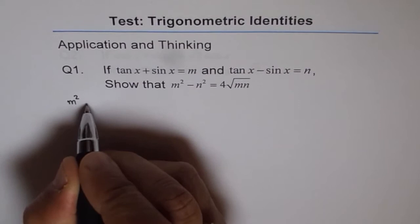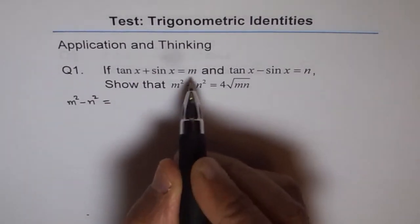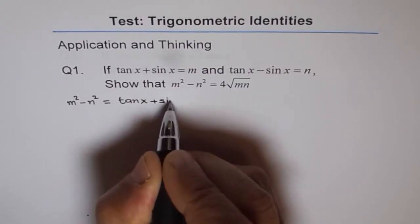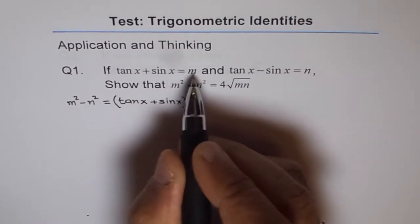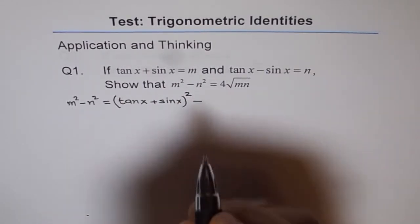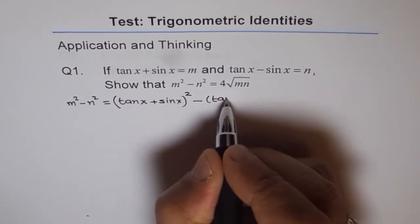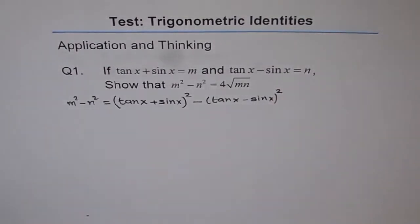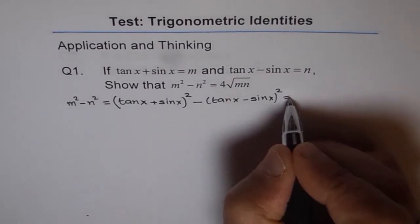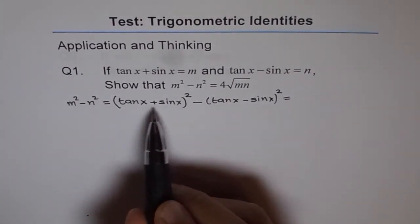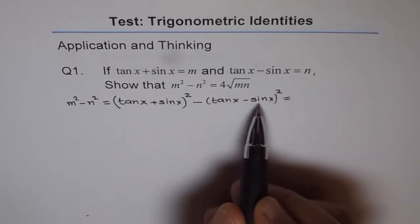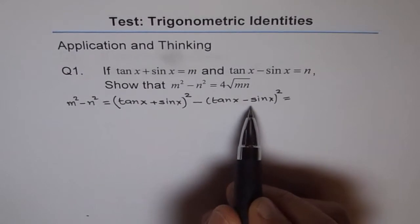So m squared minus n squared equals m squared, where m is tan x plus sin x, minus n squared, where n is tan x minus sin x, all squared. Expanding the first bracket: tan squared x plus sin squared x plus 2 tan x sin x. Expanding the second bracket: tan squared x plus sin squared x minus 2 tan x sin x.